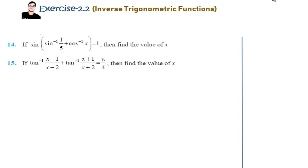Coming to question number 14 of Exercise 2.2, which deals with inverse trigonometric functions: we have, if sine of (sin⁻¹(1/5) + cos⁻¹x) is equal to 1, find the value of x. It is pretty simple if you look at it this way.